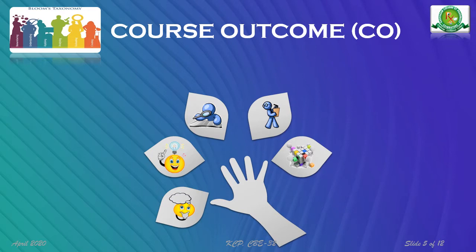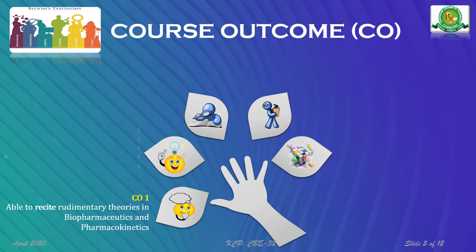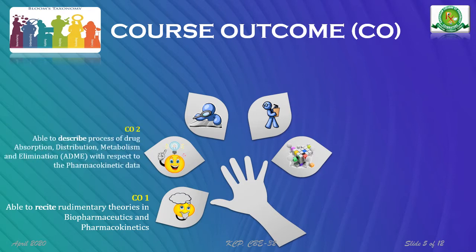CO1: the student is able to recite rudimentary theories in biopharmaceutics and pharmacokinetics. CO2: the student is able to describe the process of drug absorption, distribution, metabolism, and elimination with respect to the pharmacokinetic data.